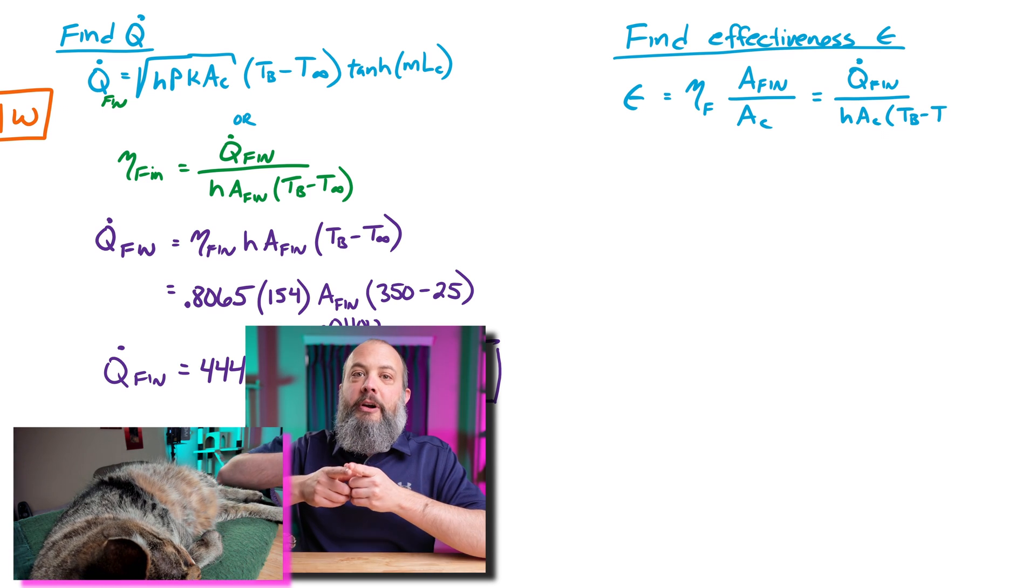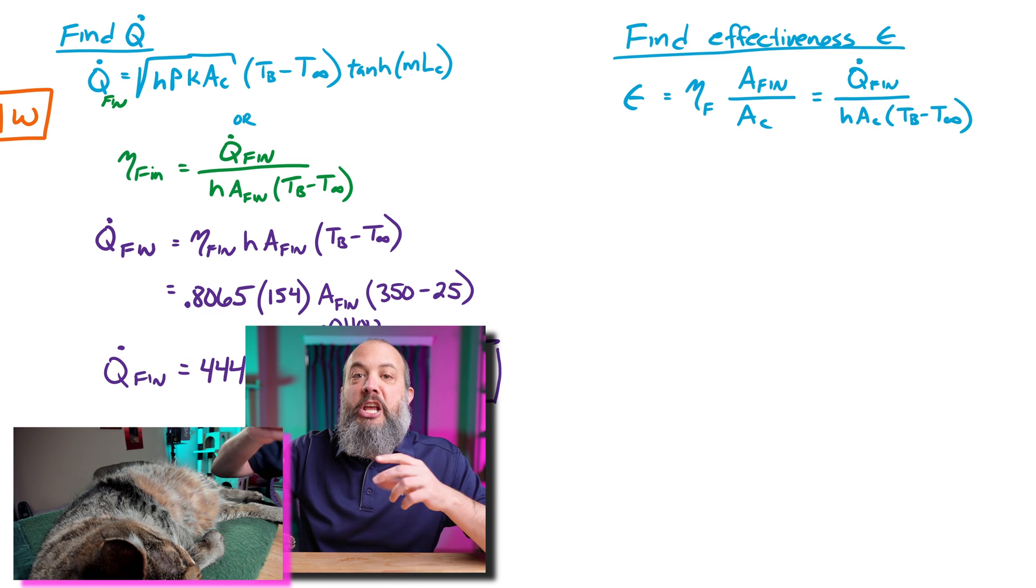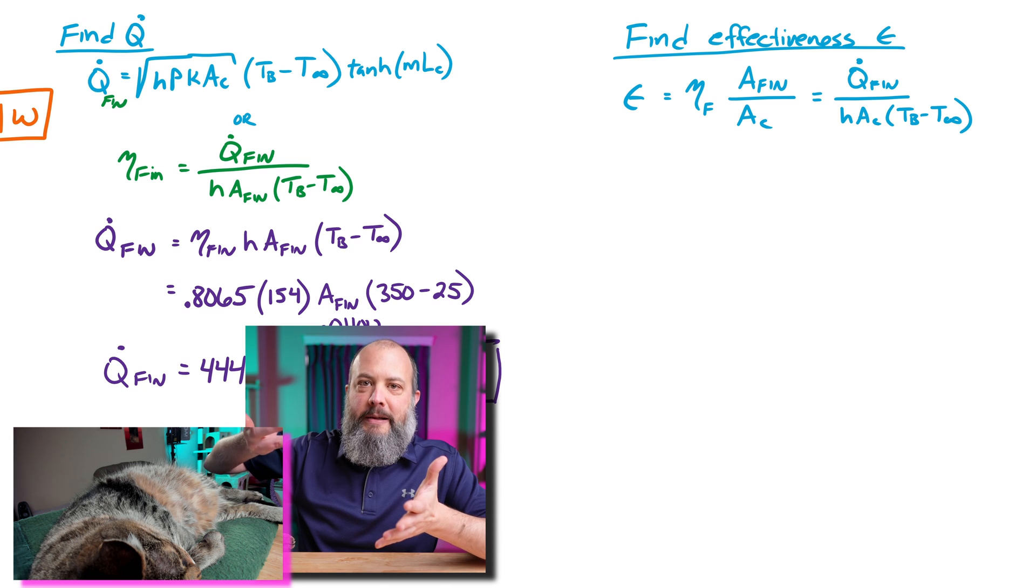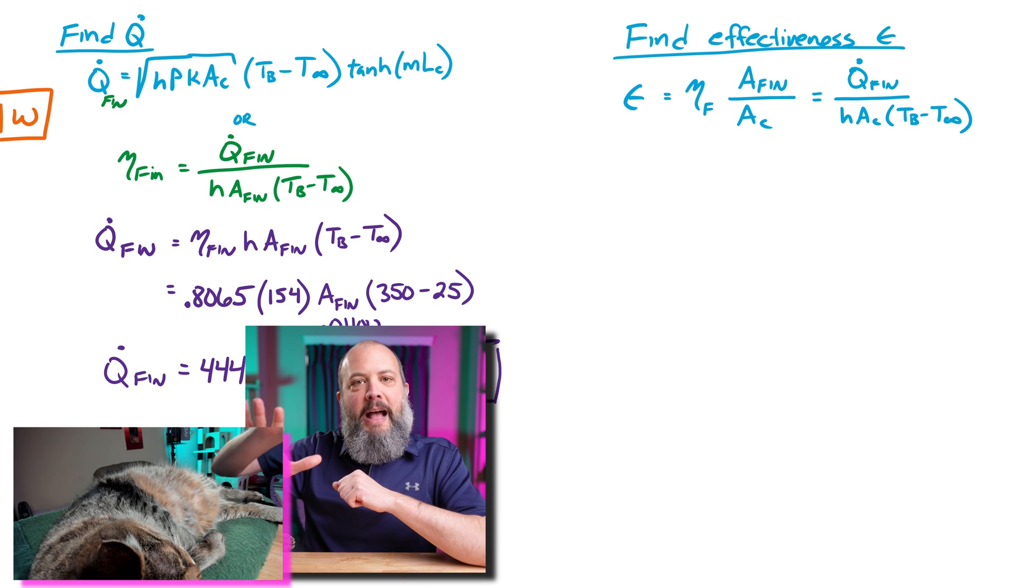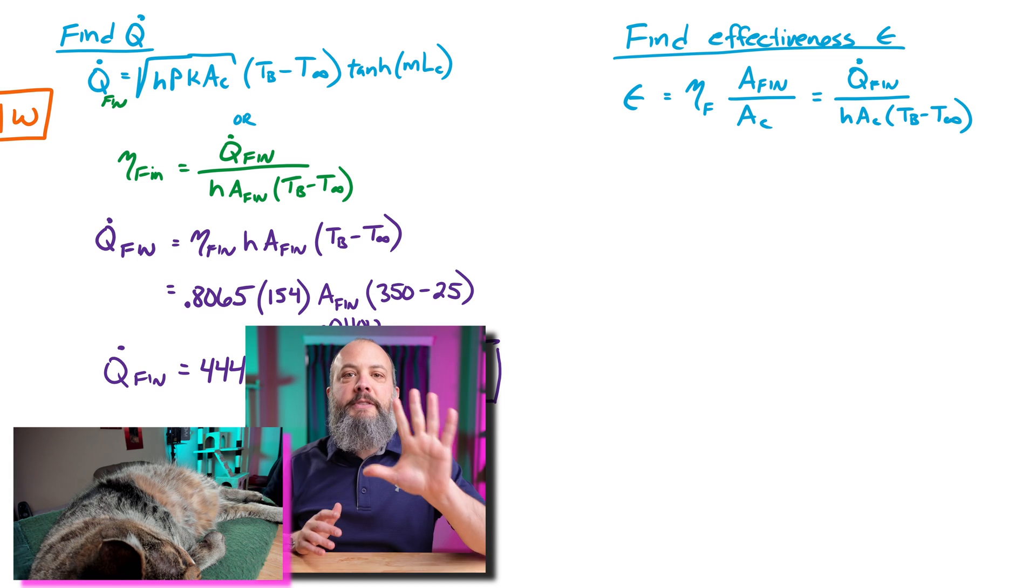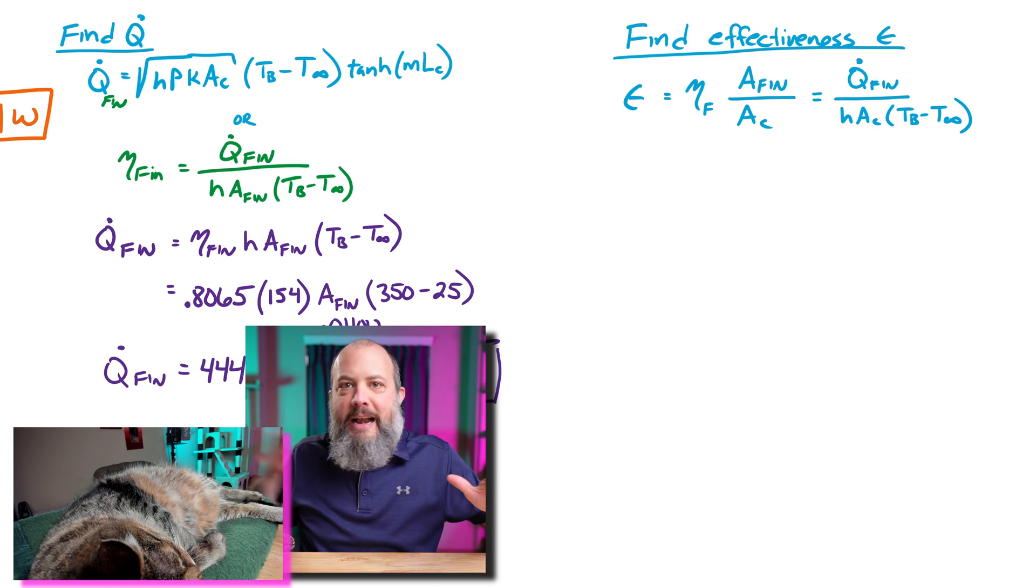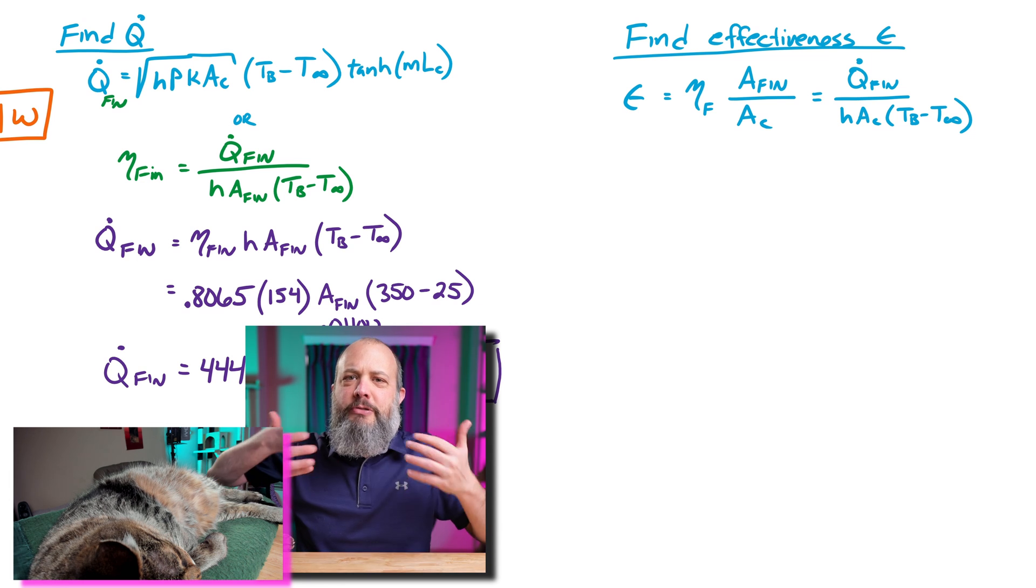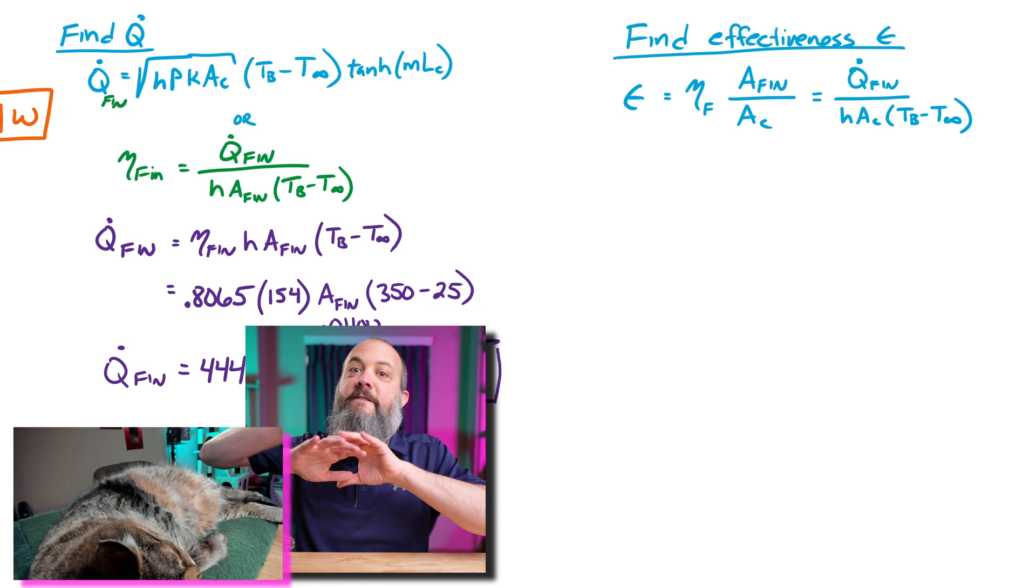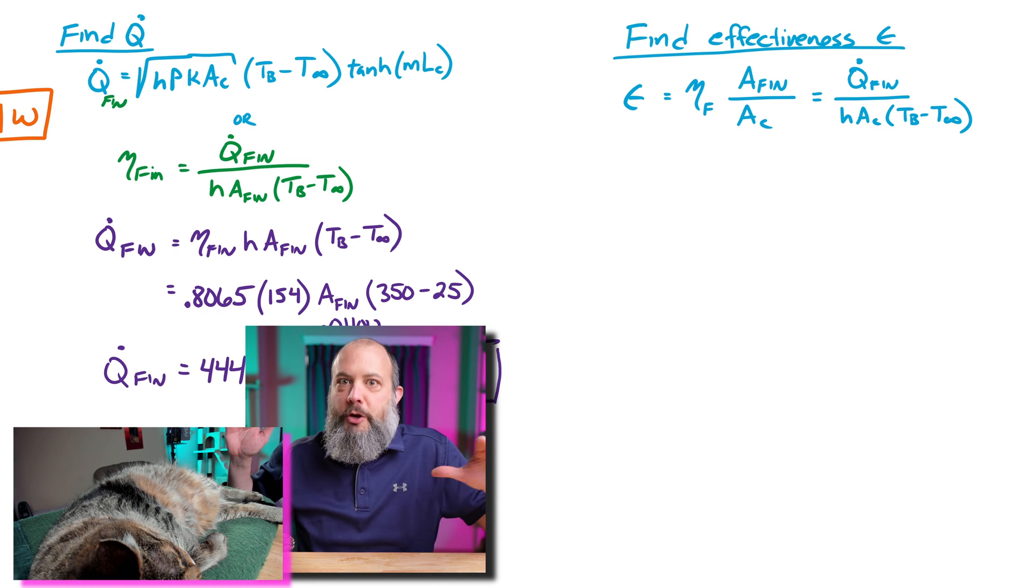And therefore, effectiveness is not a percentage. In fact, effectiveness should always be greater than one. So a fin effectiveness of five would mean you get five times more heat transfer by having the fin versus not having the fin at all. So both efficiency and effectiveness are useful measures, but they do measure very different things. Efficiency a percentage, effectiveness a ratio.